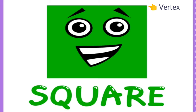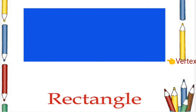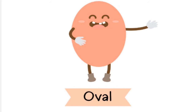A square has four sides with four vertices and all its sides are equal. The third picture is rectangle. Our rectangle has four sides but opposite sides are equal, and it also has four vertices. Next is oval. Oval doesn't have any sides.